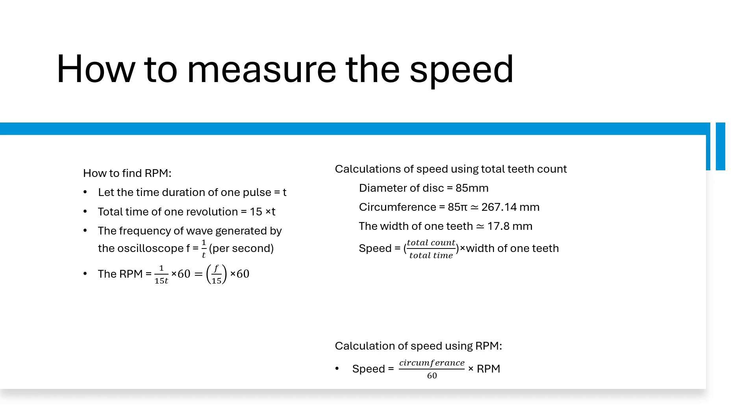And how we will find the RPM? RPM is 60 divided by 15 into T. Where 1 by T is the frequency. So we can see 60 divided by 15 is 4. So the RPM will be equal to 4 into F, where 4 is the factor of the multiplier.